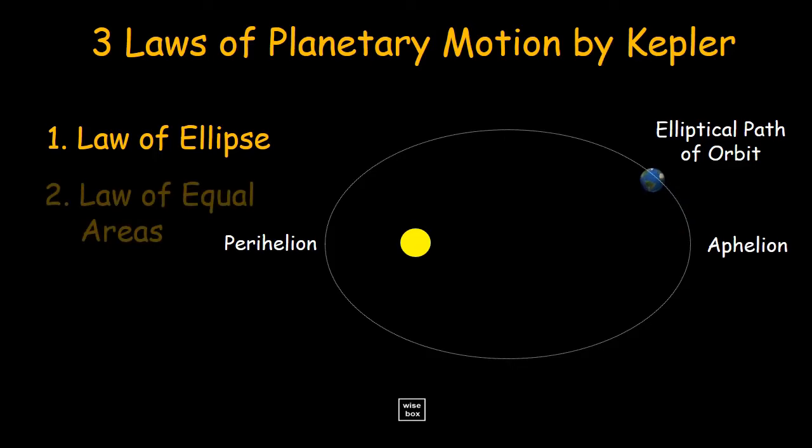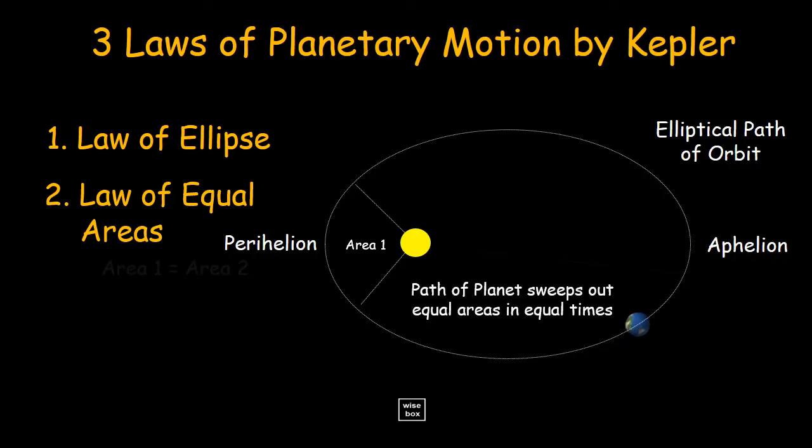Second is the law of equal areas. The line joining the Sun and the planet sweeps over equal areas in equal times as the planet travels around the orbit. This means the planet moves fastest at the perihelion and slowest at the aphelion.